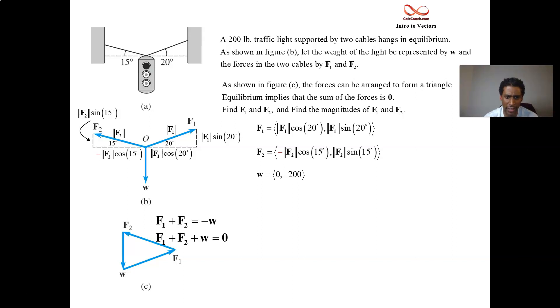A little bit of algebra. It becomes a sum, two equations, two unknowns kind of thing. Add the I components, set it equal to zero. Add the J components, set it equal to zero. So mag F1 cosine 20 minus mag F2 cosine 15 plus zero is equal to zero. Mag F1 sine 20 plus mag F2 sine 15 minus 200 is equal to zero.